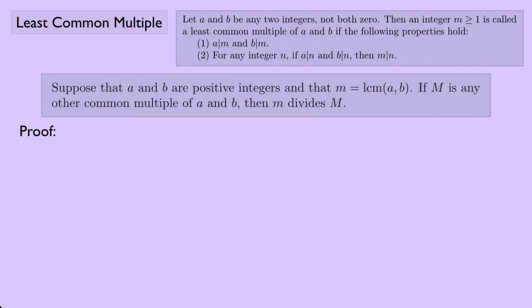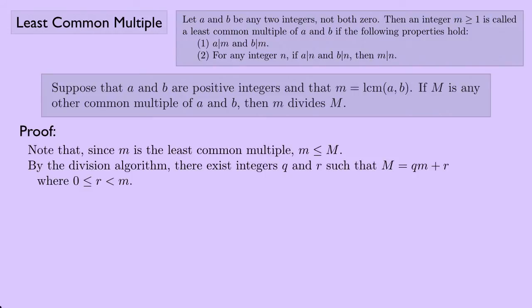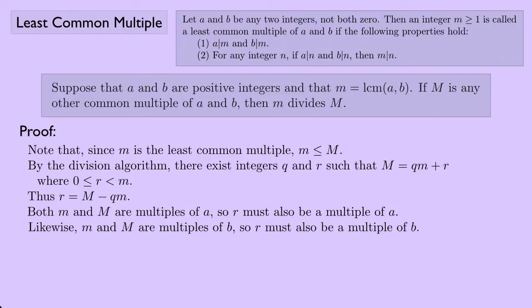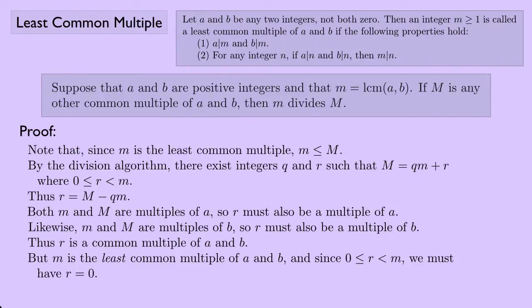Here is the formal proof. Since m is the least common multiple, lowercase m is less than or equal to uppercase M. By the division algorithm, there exist integers q and r such that uppercase M equals q times lowercase m plus r, where r is greater than or equal to zero but less than lowercase m. So r equals uppercase M minus q times lowercase m. Since lowercase m and uppercase M are both multiples of a, r must also be a multiple of a. Similarly, since both are multiples of b, r is also a multiple of b. So r is a common multiple of a and b. But since lowercase m is the least common multiple and r is greater than or equal to zero but less than m, we must have r equals zero. Therefore, uppercase M equals q times lowercase m, and lowercase m divides uppercase M, which is what we wanted to show.